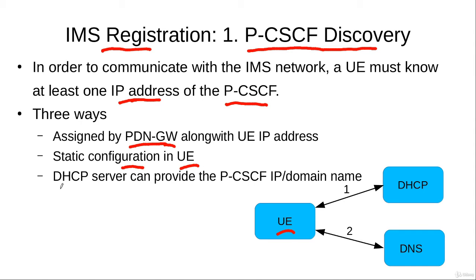The third method involves the DHCP server. In this method, a user equipment generates a query to the DHCP server, and then the DHCP server gives the IP address of the proxy call session control function to the user equipment.